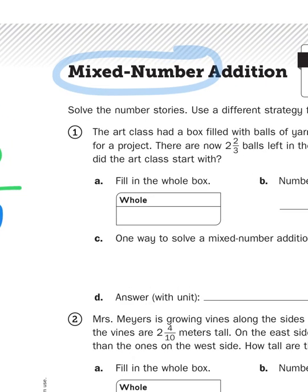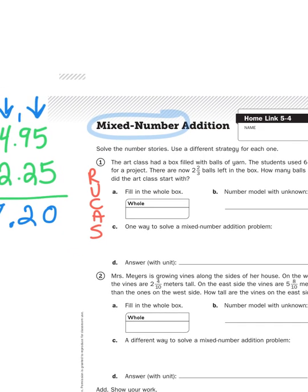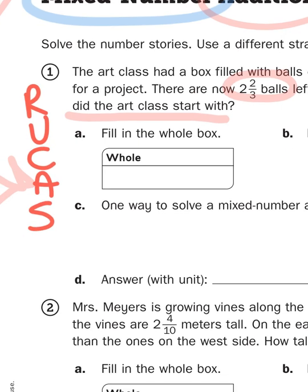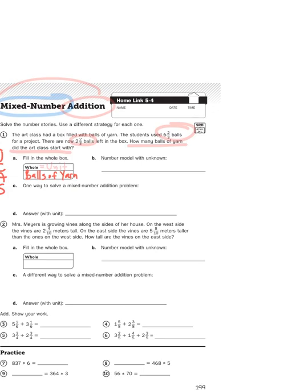So again, I'm going to use the RUCKUS strategy to help me think this through. I'm going to reread it. I'm going to underline the question. I'm going to circle the important parts and come up with an action plan. Now, spoiler, my action plan is addition because that's the title of this homelink, so I can assume that I'm going to be adding some stuff. So let's reread. The art class had a box filled with balls of yarn. The students used six and two-thirds balls of yarn for a project. There are now two and two-thirds balls of yarn left in the box. How many balls of yarn did the art class start with? So what's my whole or what's my unit? What am I counting here? And what I'm counting is balls of yarn.